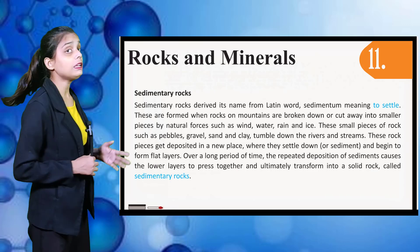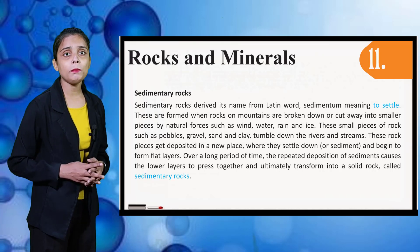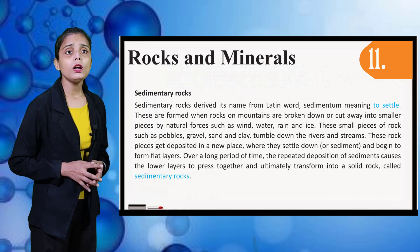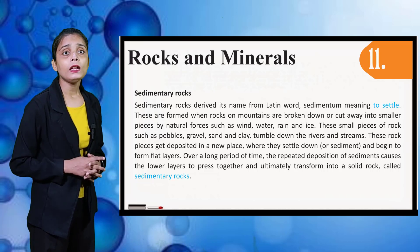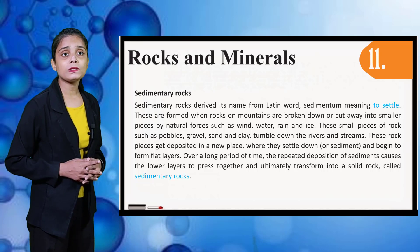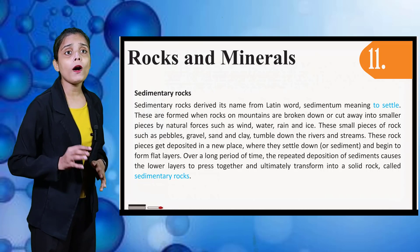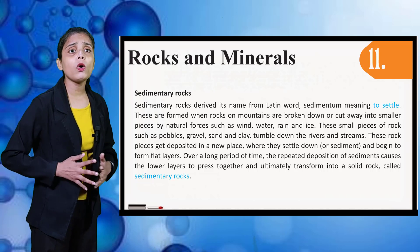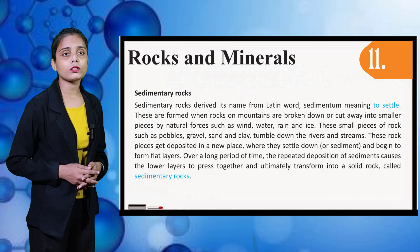Now let's see the next type, that is Sedimentary Rocks. Sedimentary rocks derive their name from the Latin word sedimentum, meaning to settle. These are formed when rocks on mountains are broken down into smaller pieces by natural forces such as wind, water, rain, and ice. These small pieces — pebbles, gravels, sand, and clay — tumble down rivers and streams. They get deposited in a new place where they settle and begin to form flat layers. Over a long period of time, repeated deposition of sediments causes the lower layers to press together and ultimately transform into a solid rock called Sedimentary Rock.